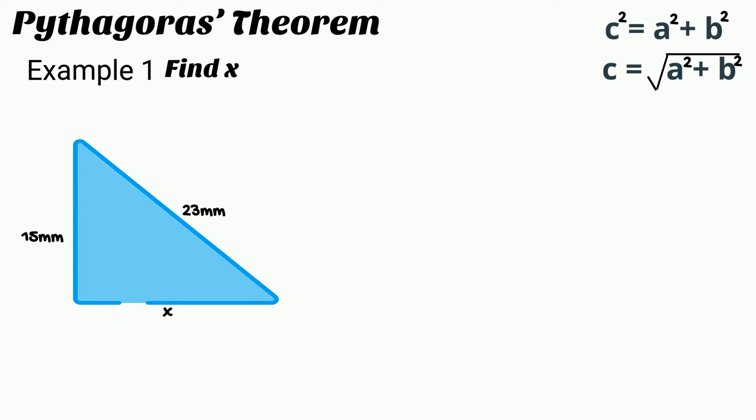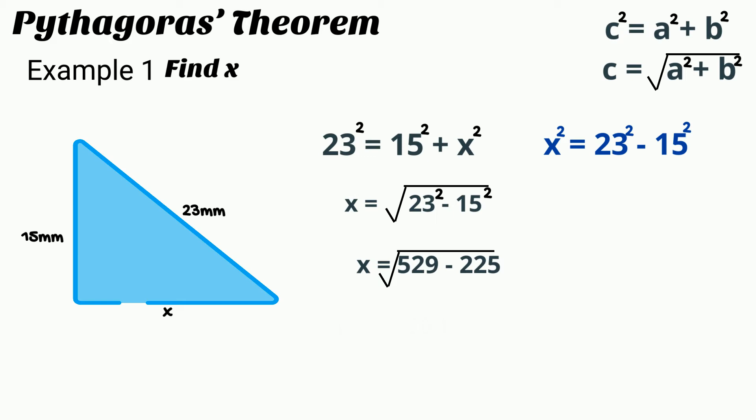In this example, the missing length is one of the smaller lengths, so we have to rearrange the Pythagoras equation before we can solve for x.